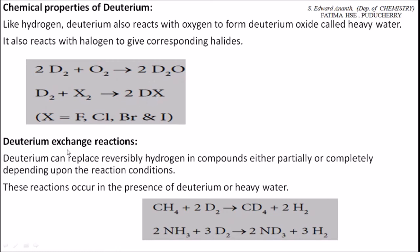Deuterium undergoes exchange reactions. This is a very important question: Give examples for exchange reactions of deuterium. Deuterium can replace reversibly hydrogen in compounds, either partly or completely depending upon the conditions.